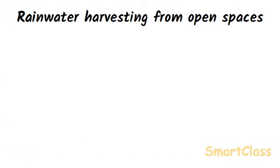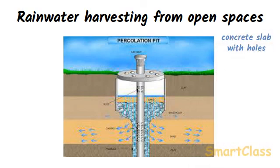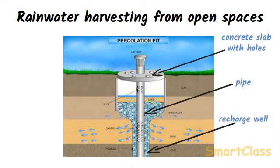Rainwater harvesting from open spaces around buildings is done by constructing percolation pits covered with concrete slabs having holes in them, connected to a recharge well through a pipe. A recharge well is about 1 meter in diameter and 3 meters deep. The rainwater falling in the open spaces around buildings goes into the percolation pit through the holes in its concrete slab cover, and after filtration enters the recharge well through an outlet pipe and gradually seeps into the soil. The purpose of the recharge well is to collect a large amount of water quickly when it rains and then make it seep into the soil gradually. The main purpose of rainwater harvesting is to make rainwater percolate under the ground more efficiently to recharge or replenish the groundwater.